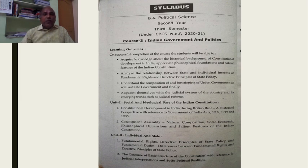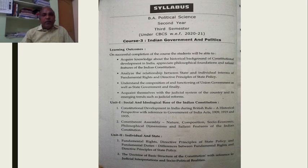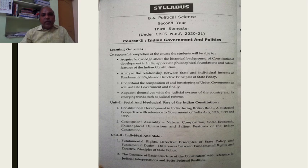Unit 1 consists of two parts. In the first part: Constitutional Development in India during British rule — a historical perspective with reference to the Government of India Acts 1909, 1919, and 1935. In the second part: Constituent Assembly — nature, composition, socio-economic and philosophical dimensions, and salient features of the Indian Constitution.